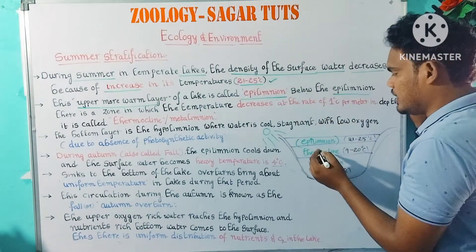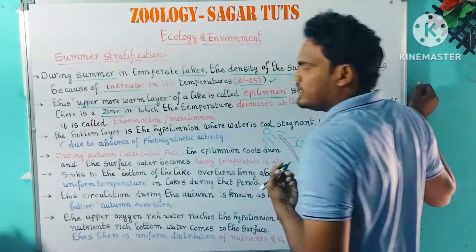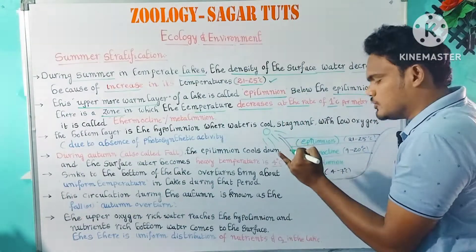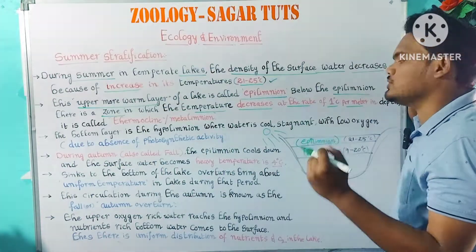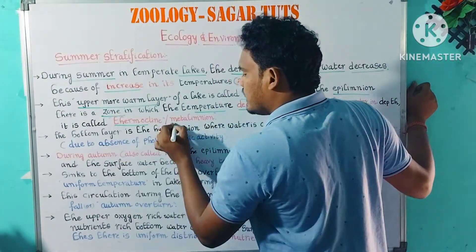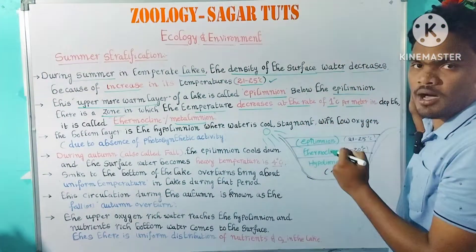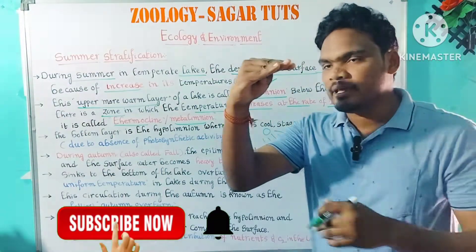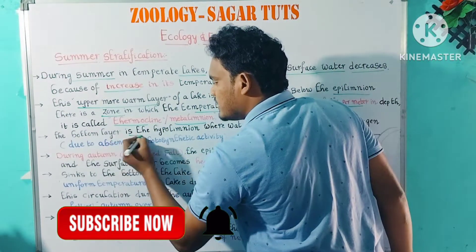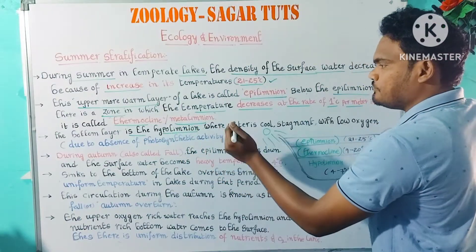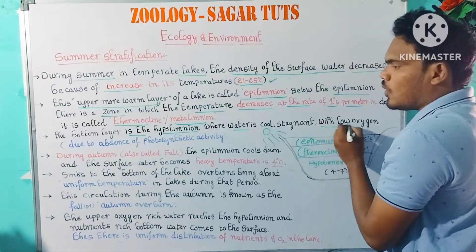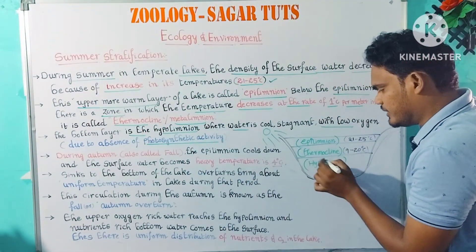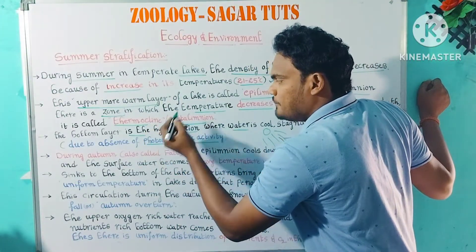Below the epilimnion there is a zone where the temperature decreases at the rate of 1 degree per meter. This depth is called the thermocline, or metalimnion. You can observe that thermocline is the same as the metal layer.